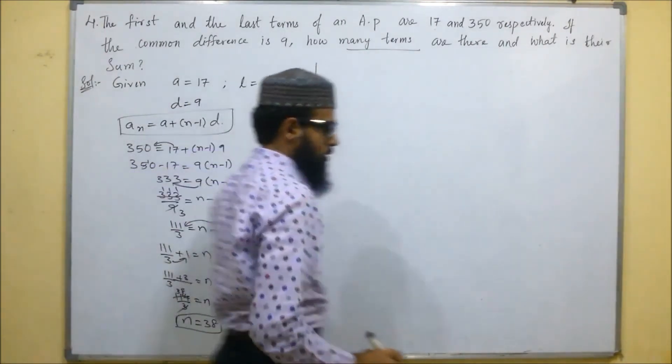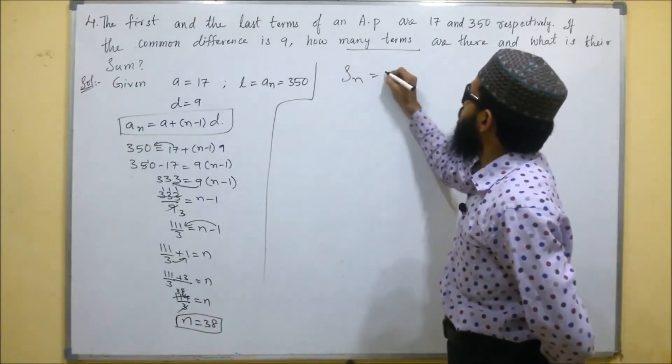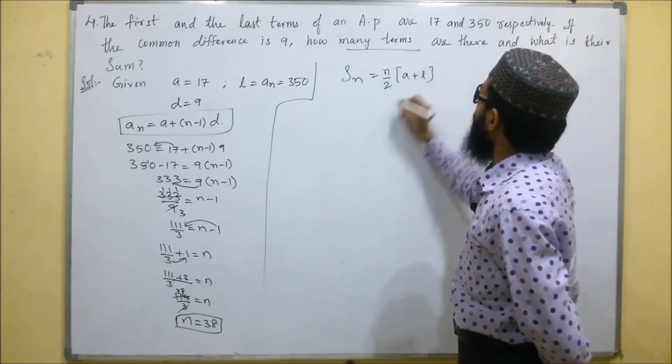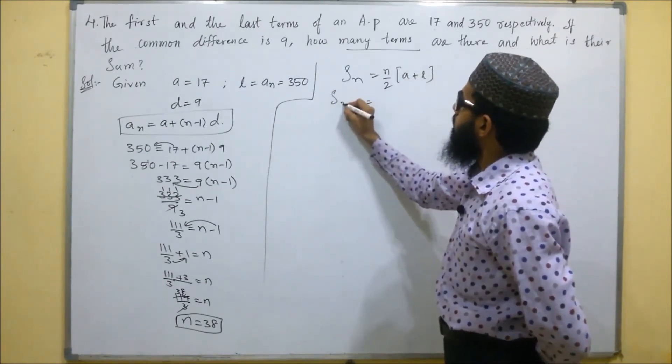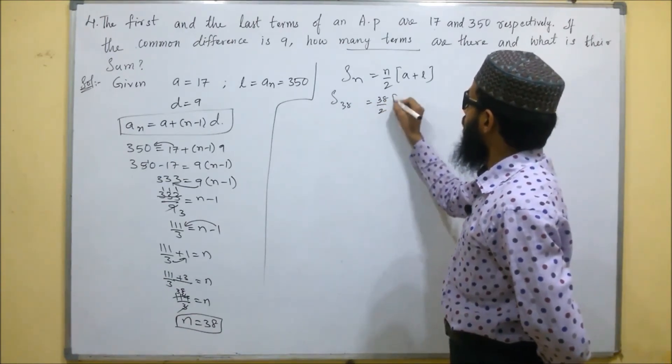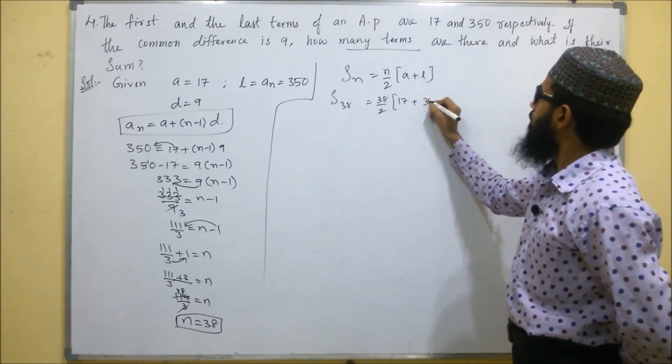Next, we have to find the sum. Sum formula is Sn equals N by 2, A plus L. So Sn, N is 38. N is 38 by 2. What is A? A is 17 plus last term is 350.